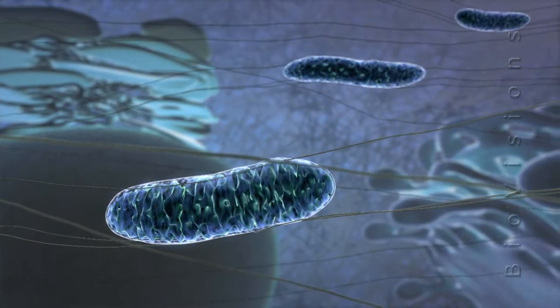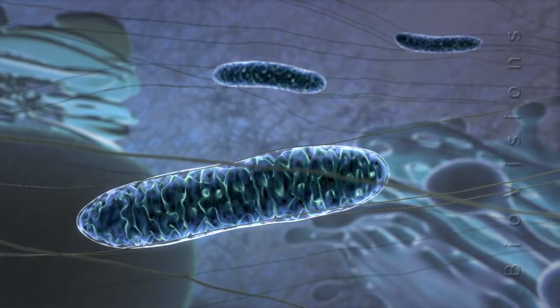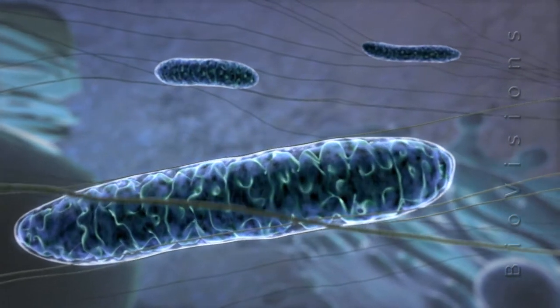Mitochondria are organelles found in eukaryotic cells that play an important role in the production of ATP, the universal energy currency used in cells.